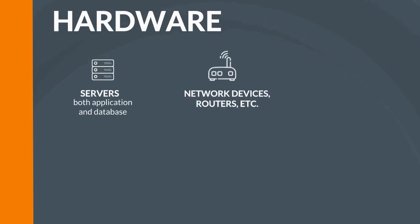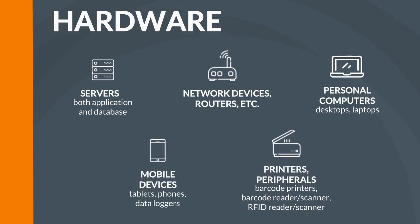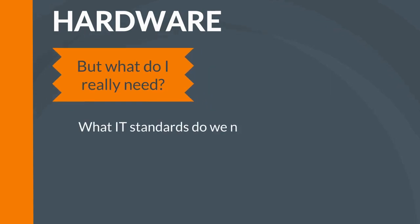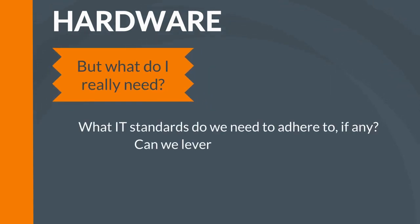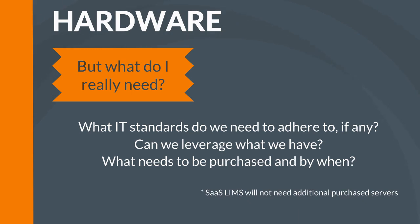Hardware. There are several kinds of hardware that you will need to address when analyzing your LIMS costs, including servers, network devices, personal computers, mobile devices, printers, and other peripheral devices. Before purchasing new hardware to support your LIMS, you must determine what you really need. Ask yourself: What IT standards do we need to adhere to? Can we leverage what we have? What needs to be purchased and by when? Of course, if you elect to go with a SaaS LIMS, you will not need to purchase any new servers, as the application and database will be hosted by the SaaS provider in the cloud.